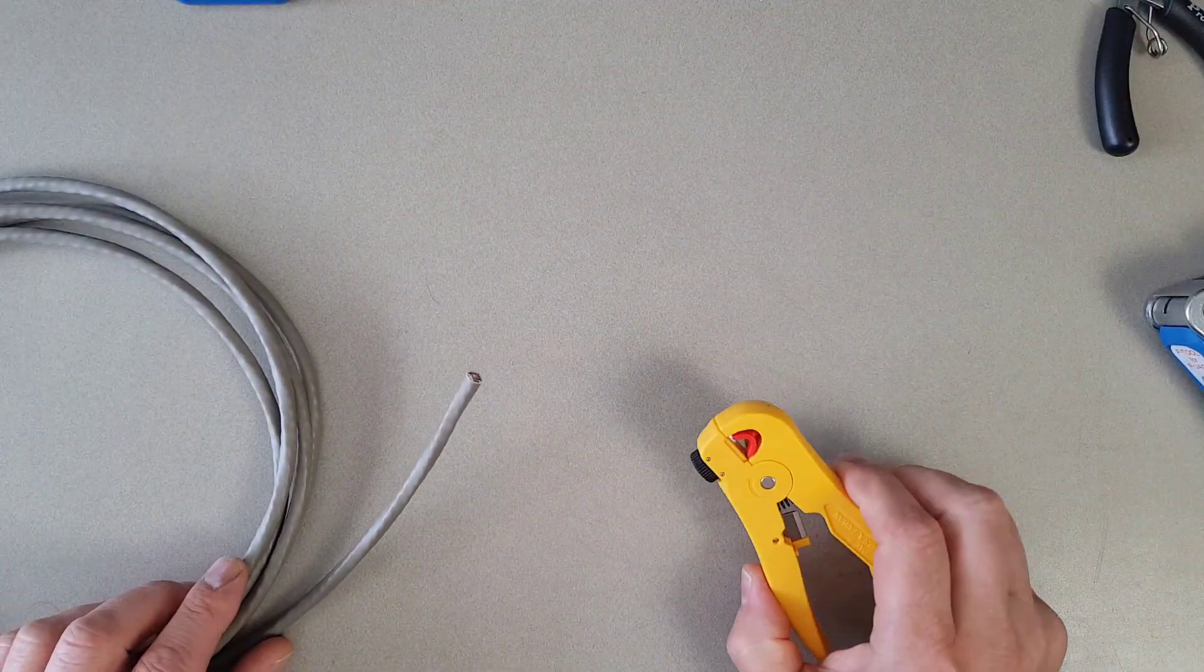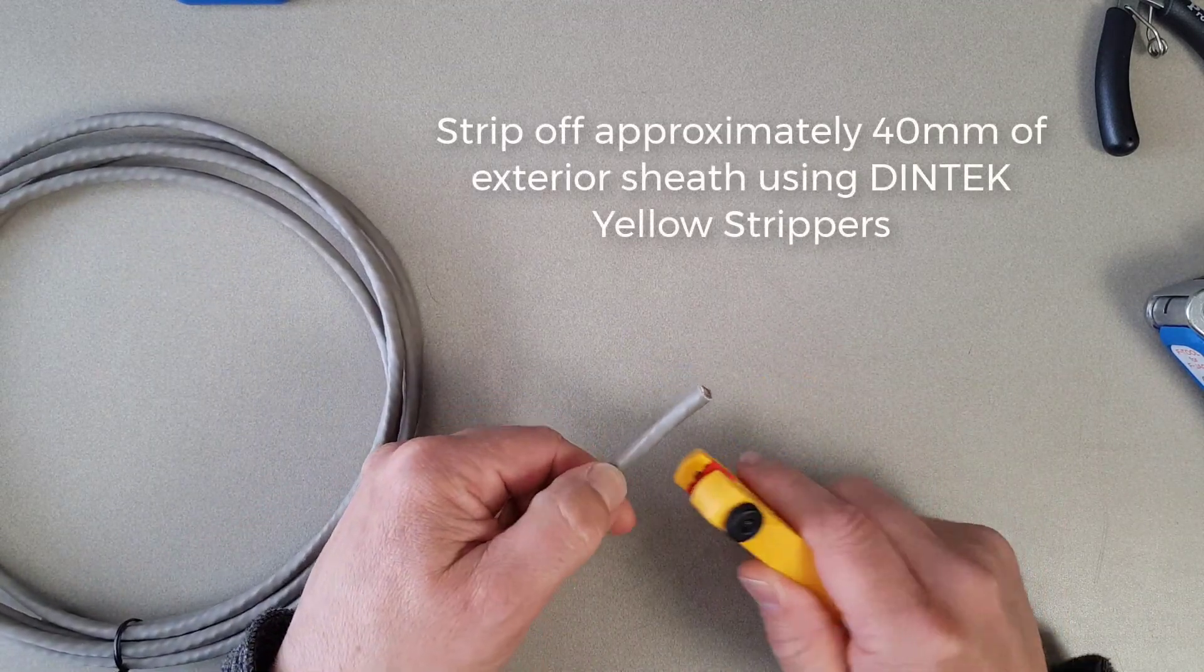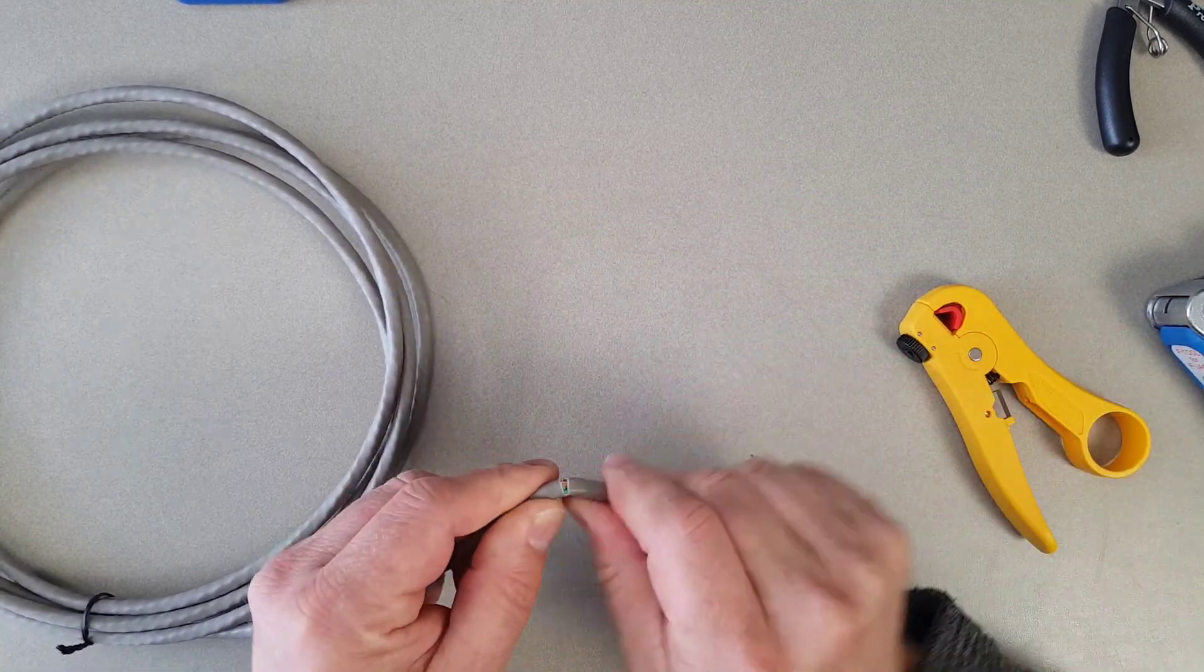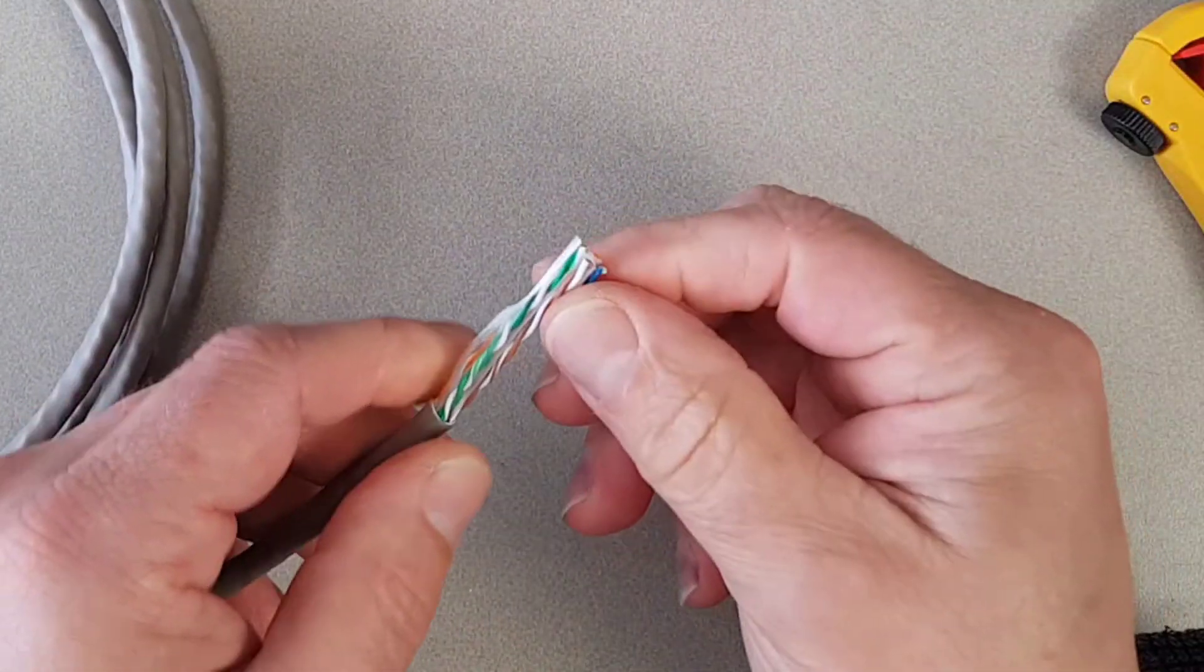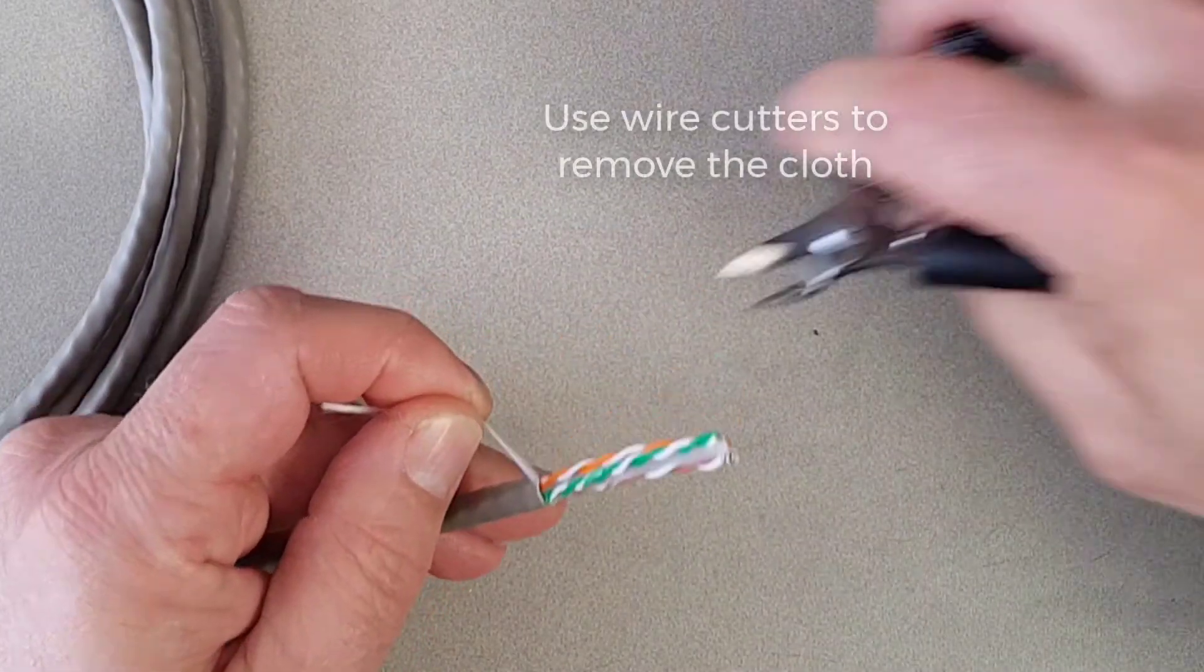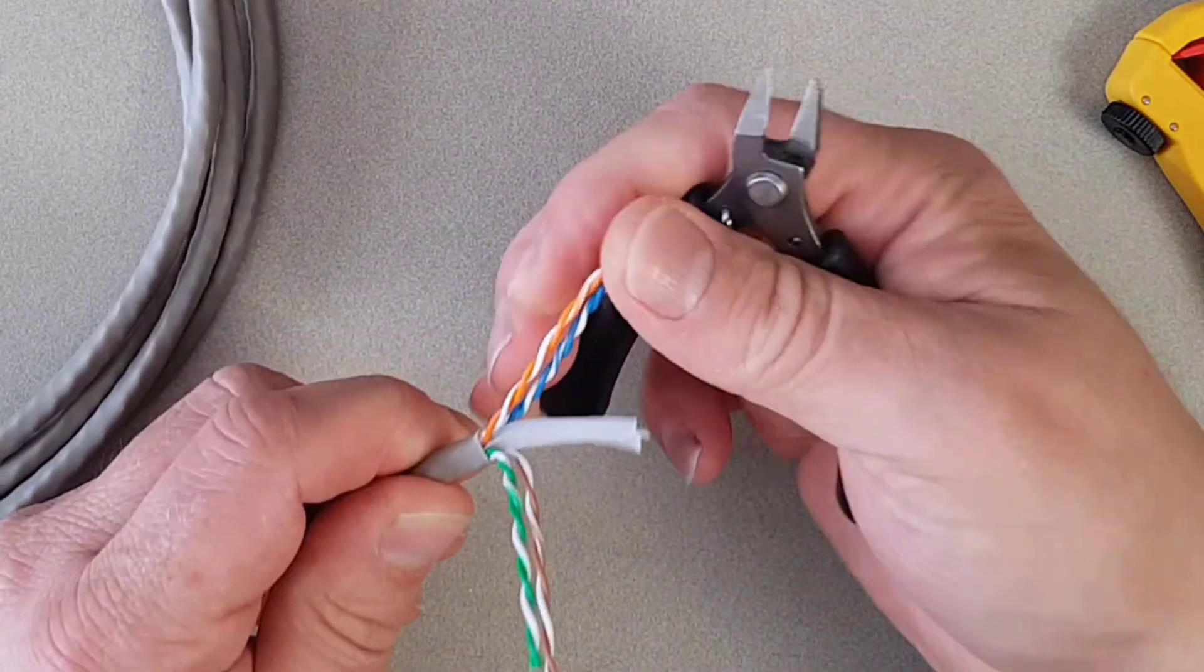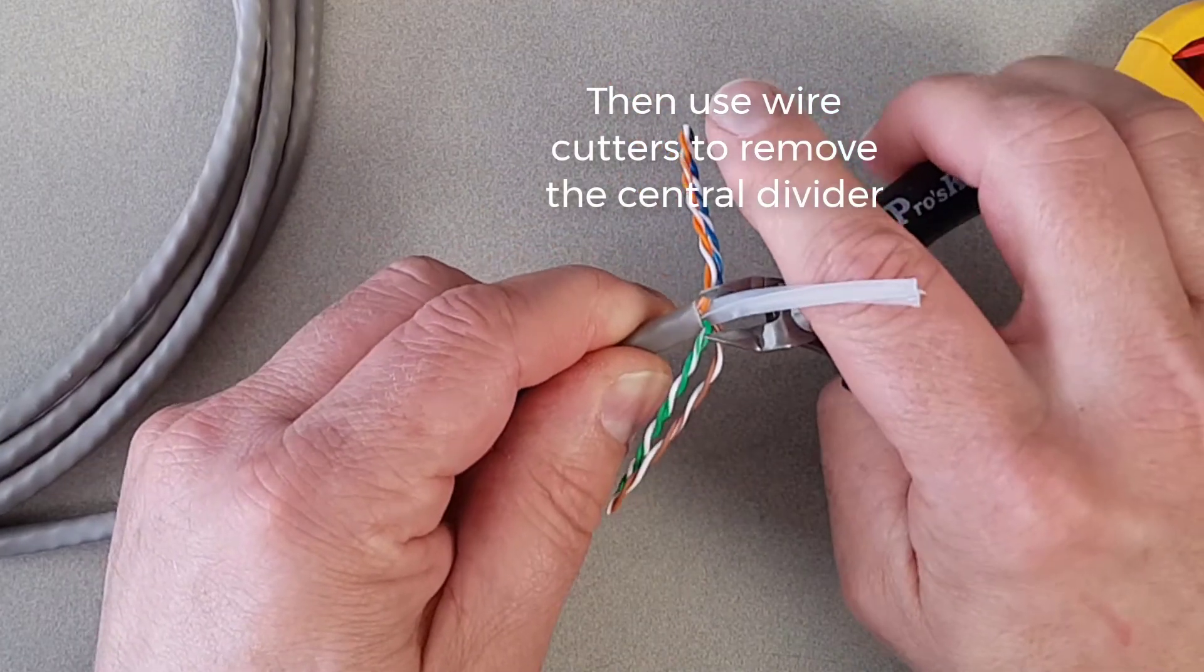First we will strip off about 40 millimeters of sheath. We just need to run the strippers around only once, just enough to score the sheath. We don't want to cut all the way through and into the wires below. We can take the cutters and then take out the cloth and expose the central spacing part, and we'll cut that out as well.